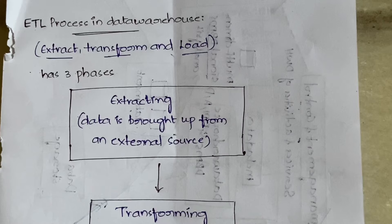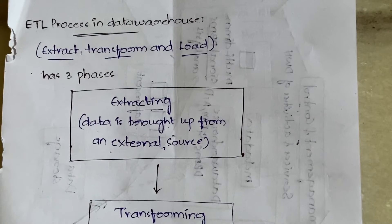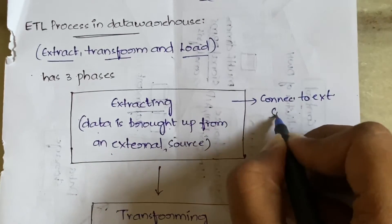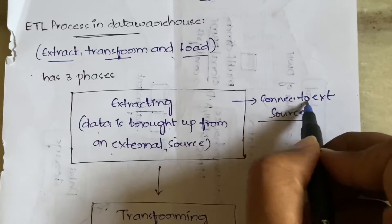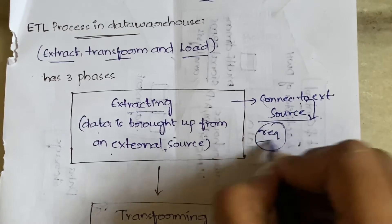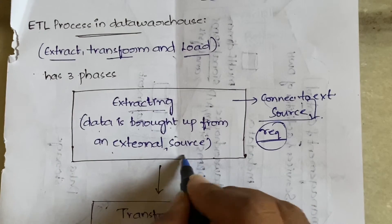In the Extract phase, data is brought from external sources — not just a single source, but from different sources. We connect to an external source and we do not blindly copy all the data, because we have to consider whether the data is useful for us. We select and collect only the necessary information — whatever is required for analyzing and processing — and only that data should be extracted.